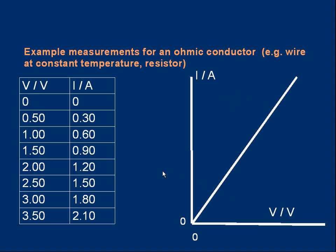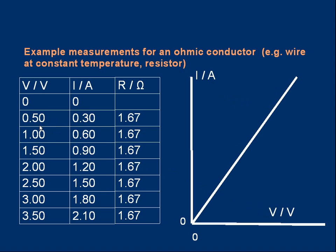With this table of results, can we work out the resistance? Resistance is voltage divided by current. Each pair of readings gives us a value of resistance. For example, 0.5 volts divided by 0.3 amps gives 1.67 ohms. It should be no surprise that we get the same result for each pair of readings — the resistance is constant because the resistor obeys Ohm's law, meaning the ratio of voltage to current is constant.